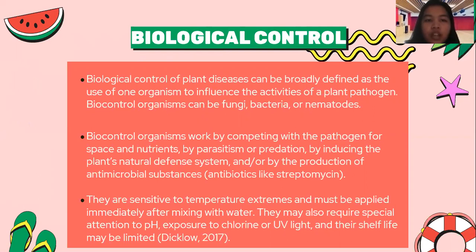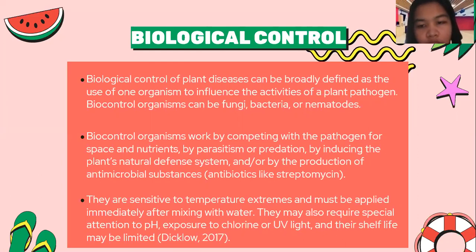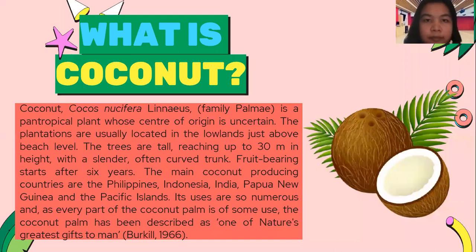The biological control of plant disease can be broadly defined as the use of one organism to influence the activities of a plant pathogen. Biocontrol organisms can be fungi, bacteria, or nematodes. They work by competing with the pathogen for space and nutrients, by parasitism or predation, by inducing the plant's natural defense system, and by the production of antimicrobial substances. They are sensitive to temperature extremes and must be applied immediately after mixing with water. They may also require special attention to pH, exposure to chlorine or UV light, and their shelf life may be limited.